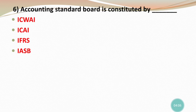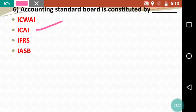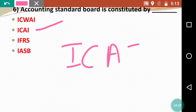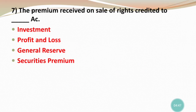Question 6: Accounting Standard Board is constituted by — options are ICWAI, ICAI, IFRS, and IASB. The correct answer is ICAI — the Institute of Chartered Accountants of India. Remember these boards: ICWAI, ICAI, IFRS (International Financial Reporting Standards), and IASB (International Accounting Standards Board). Accounting Standard Board is constituted by ICAI.